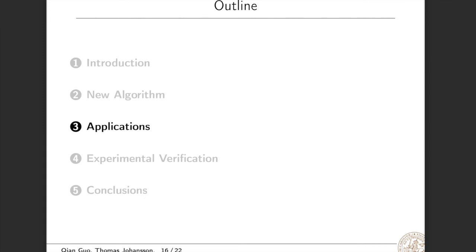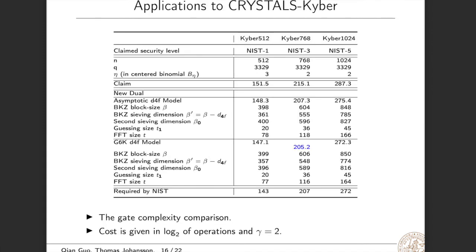Next I will introduce applications of the new dual algorithm. So first I will introduce applications to Crystals Kyber. We see that this table shows the gate complexity comparison. The cost is given in log_2 of the operations, and here gamma is 2. We show the claimed security levels, and also we show the complexity numbers for the new dual lattice attacks in the asymptotic D4F model and in the BDGL D4F model. We see that the gains are generally big. For instance, for Kyber 1024 in the BDGL model, we achieve a gain of almost 15 bits. According to the analysis, we see that some schemes are really on the edge and some schemes offer a rather limited security margin. For Kyber 768 in the BDGL model, we see that this scheme has two bits of security loss.